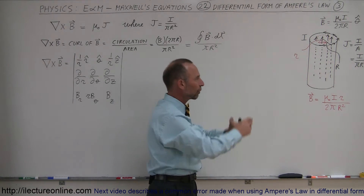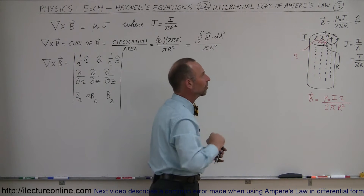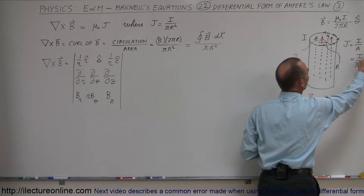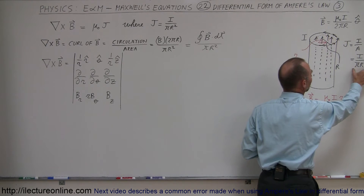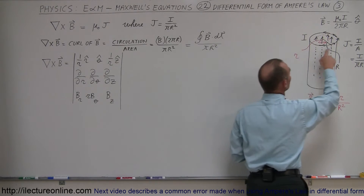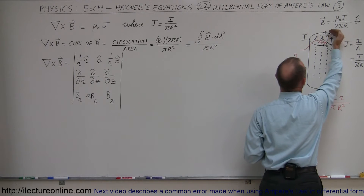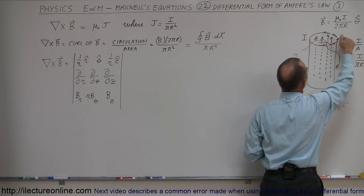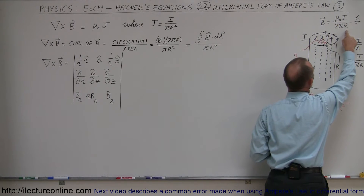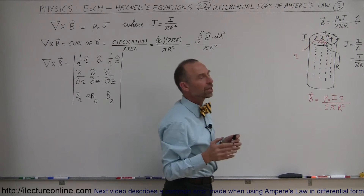Assuming that charge is flowing through the cylindrical conductor evenly spread out in a uniform density such that the current density J is equal to I divided by the area, or the total current to the cylinder divided by πR². At the edge of the cylinder, the magnetic field strength in the circular direction around the current would be equal to μ₀ times I divided by 2πR, in the theta unit vector direction.